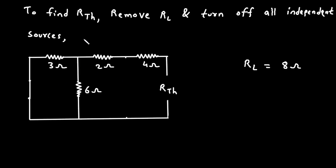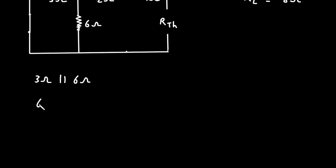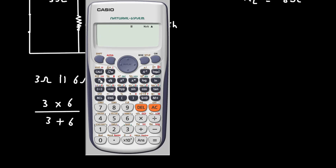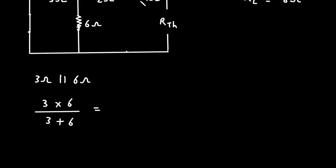Now we can easily find the value of RTH. Here we can see 3 ohm and 6 ohm are connected in parallel. So 3 ohm parallel with 6 ohm: this will be 3 into 6 divided by 3 plus 6, which is equal to 2 ohm.